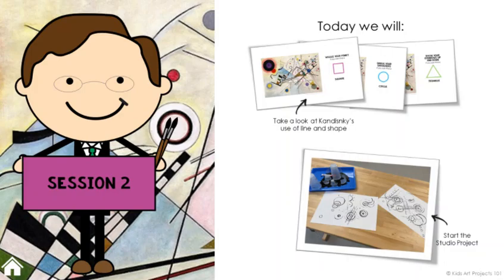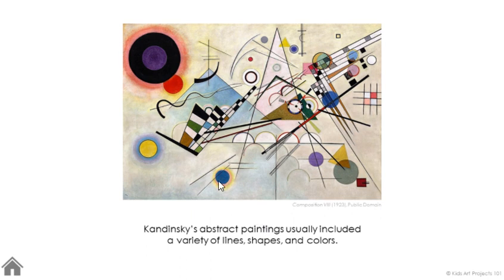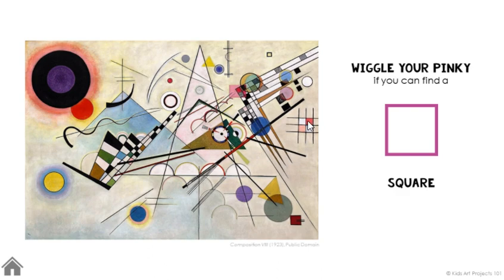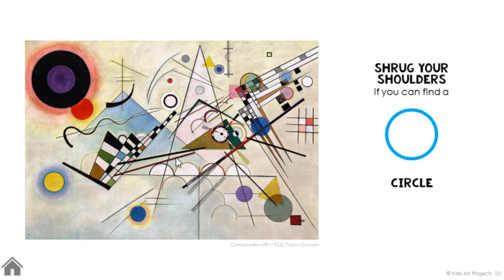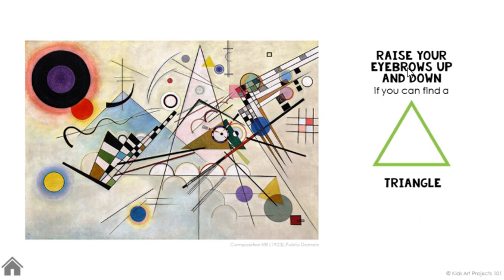When they come back for session two, you're going to break that session into two chunks. First, you're really looking at the individual components — the shapes and lines that Kandinsky used in this particular composition. This is his Composition Eight from 1923, and I love it because it so clearly includes squares, circles, rectangles, parallel lines, and intersecting lines. Use that vocabulary — shrug your shoulders if you find a circle, raise your eyebrows up and down if you find a triangle. This engages them physically and has them giggling while really identifying shapes and lines.